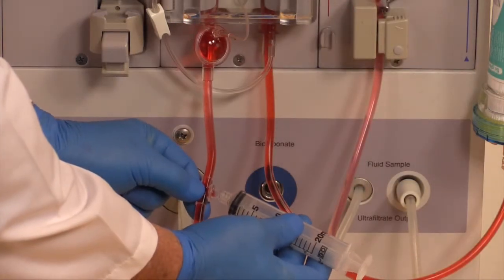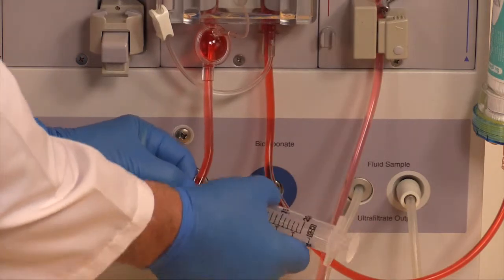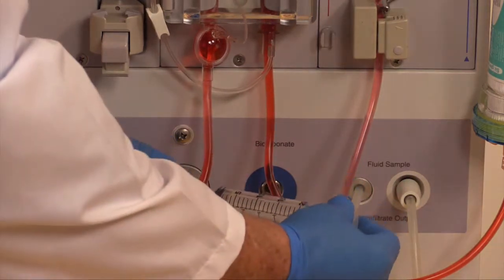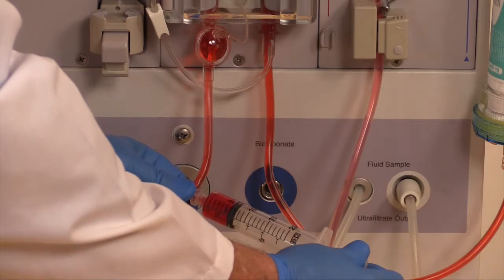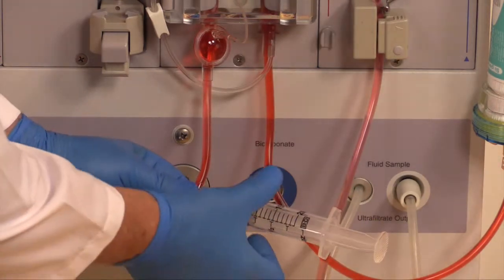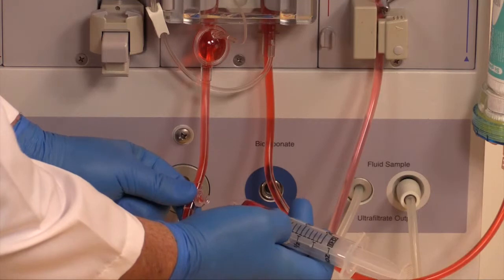If using syringe, insert male-luer and turn to the right then pull back the desired amount of blood. Then turn left and remove syringe.